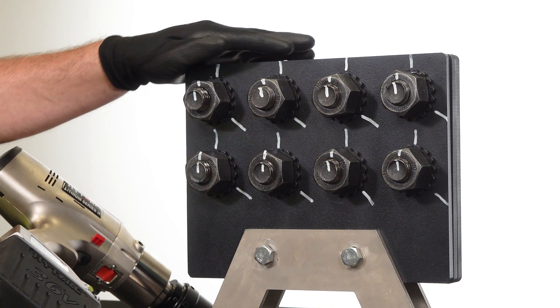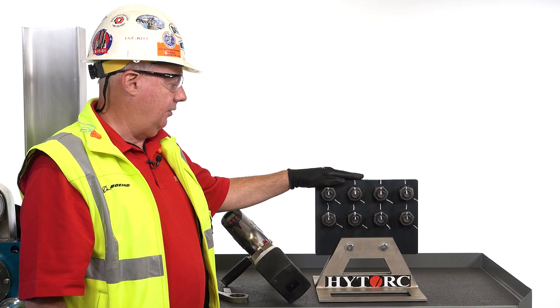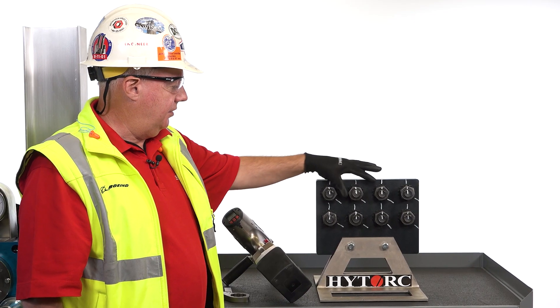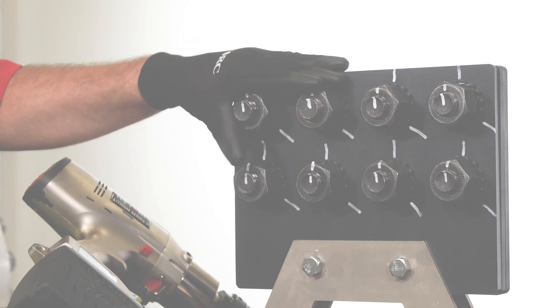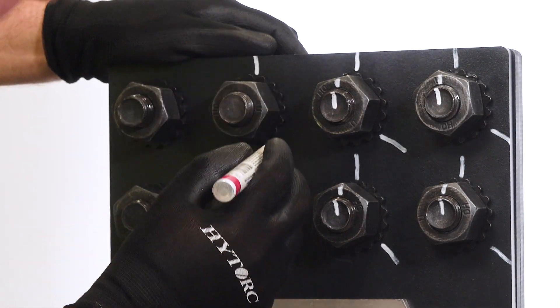Now we're going to move on to final tightening of this structural connection. We're going to proceed from the middle of the connection to the free edges. We've match marked all the assemblies in this case.